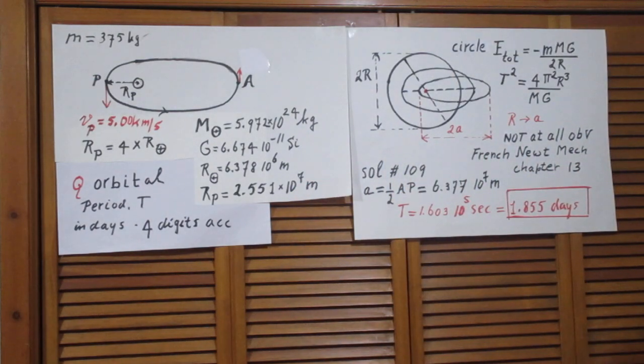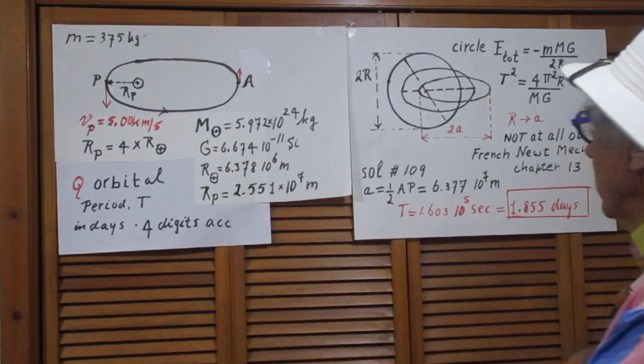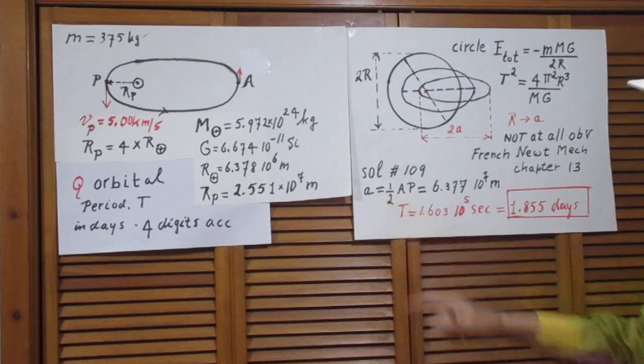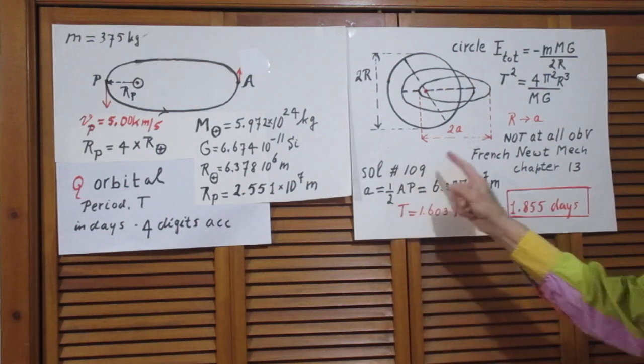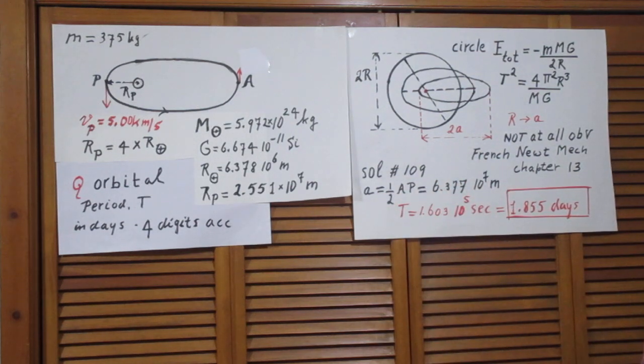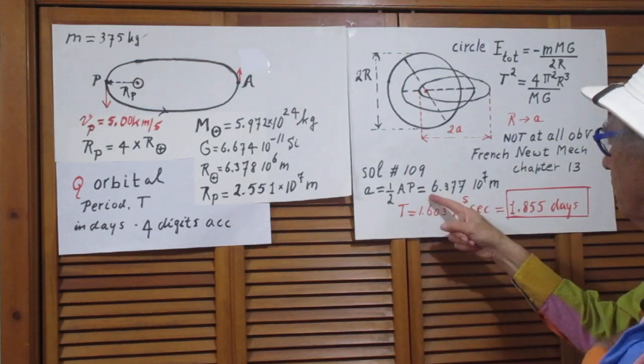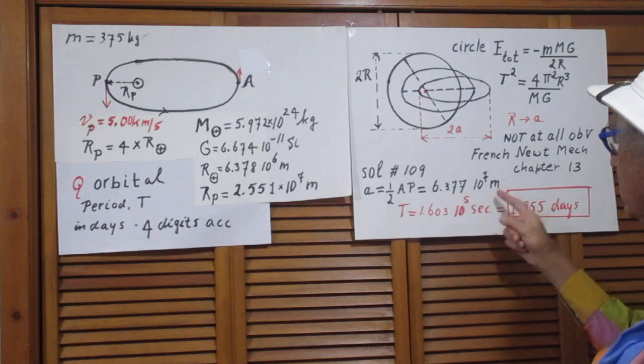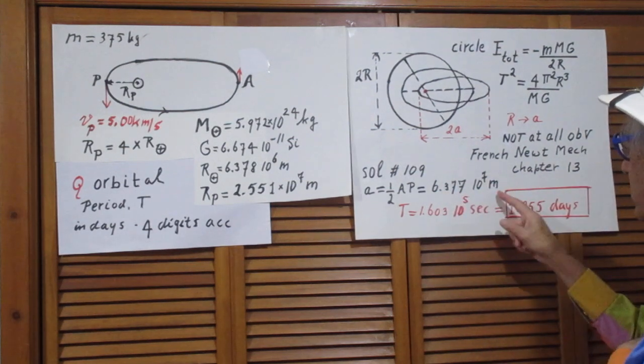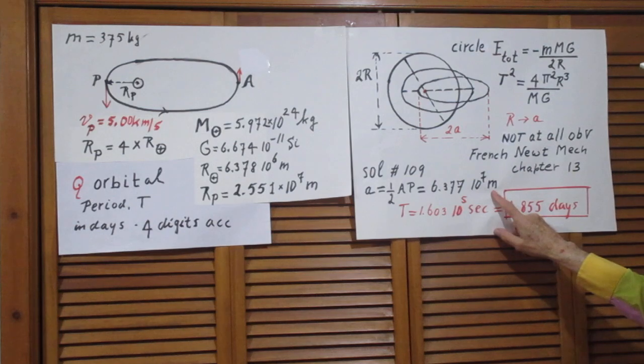So, all you would have to know now, what for this orbit A is. Well, I solved that in problem 109. A is half AP and I derived there that it is 6.377 times 10 to the 7 meters. This is meters.